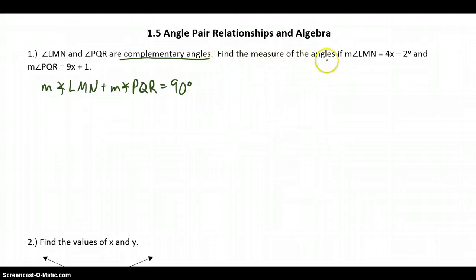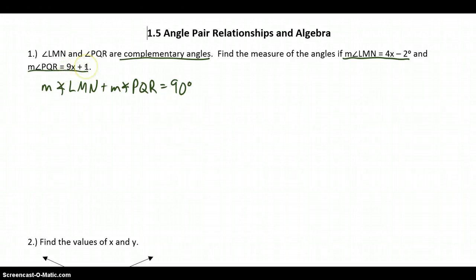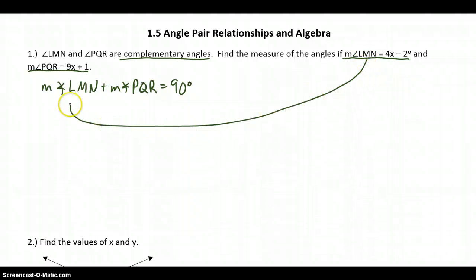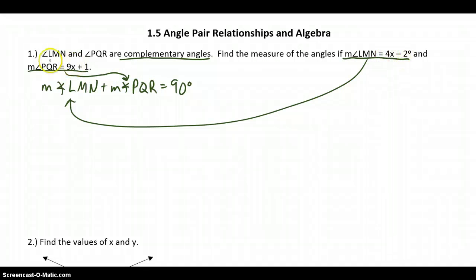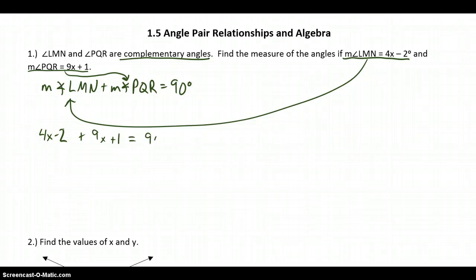Our second sentence says to find the measure of the angles if the measure of angle LMN equals 4x minus 2 degrees, and the measure of angle PQR equals 9x plus 1. I can take this statement and plug it in for the measure of angle LMN, and plug this statement in for the measure of angle PQR. So I'm creating a new statement: 4x minus 2 plus 9x plus 1 equals 90 degrees, substituting these two into my original equation.